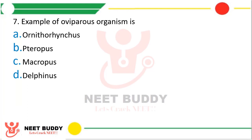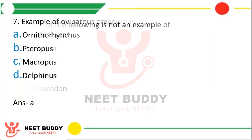Question seven: example of an oviparous organism is — option A, Ornithorhynchus; option B, Tyrophus; option C, Macrophus; or option D, Delphinus? Oviparous organisms are those who lay eggs, while viviparous are those who give birth to their child. The correct answer is option A, Ornithorhynchus — it is the scientific name of platypus. Platypus is a mammal which lays eggs, so it is oviparous.